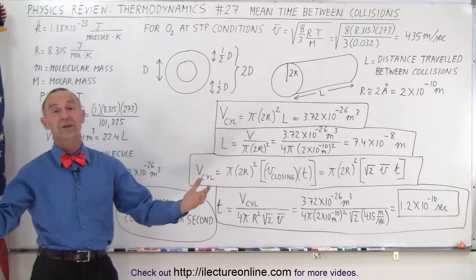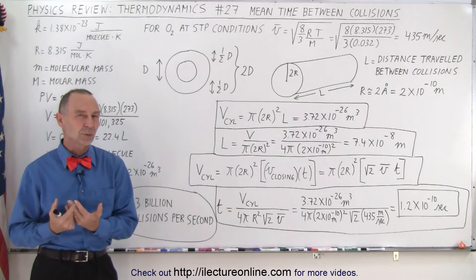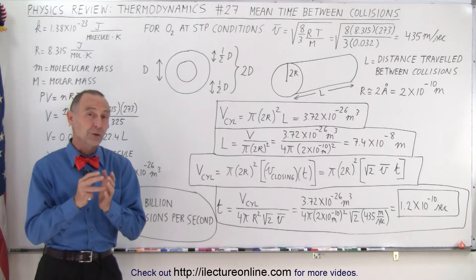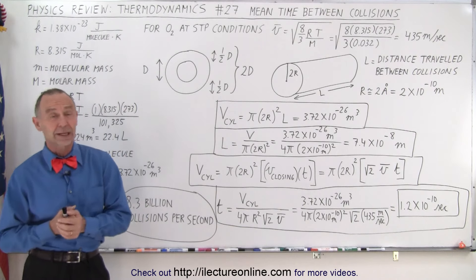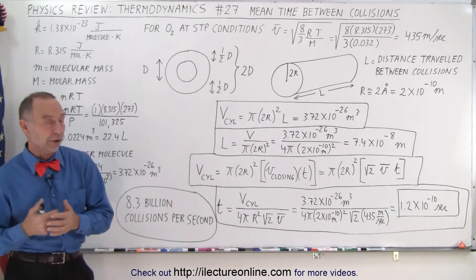In this case we're going to take the atmosphere at STP conditions, which means the temperature of 0 degrees Celsius, 273 Kelvin, and atmospheric pressure.